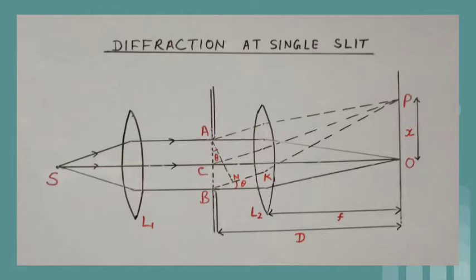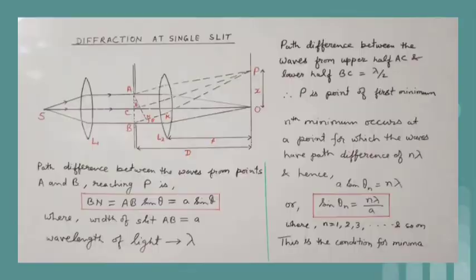As seen in the diagram, AN is perpendicular to BK, so that the path difference between the secondary waves from A and B reaching point P on the screen is BN, which is equal to AB sin theta, or equal to A sin theta, where the width of the slit AB is equal to A.